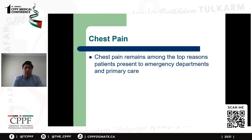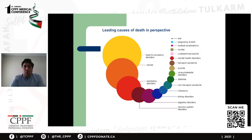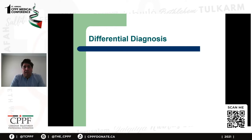Chest pain remains among the top reasons patients present to emergency departments and primary care. When you look at all the causes of death, cardiovascular causes remain the number one cause of death in the world according to recent WHO data. There are other causes and COVID is changing the distribution, but still cardiovascular cause is the main cause. When you see any patient with chest pain, it is very important to remember the differential diagnosis for the possible causes, as that will help you decide what to do next and how to make the diagnosis and treatment.